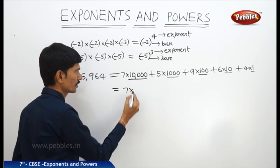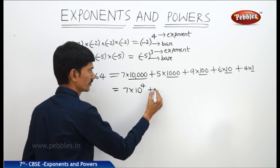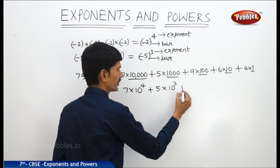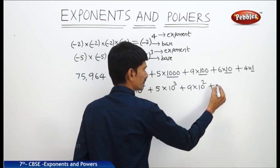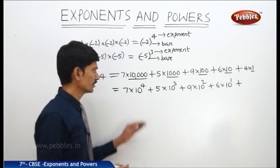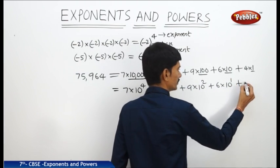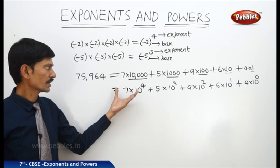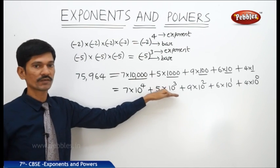Notice that the exponents of 10 are in decreasing order: 4, 3, 2, 1, 0. We can also write expansions of decimal numbers using negative exponents of base 10.